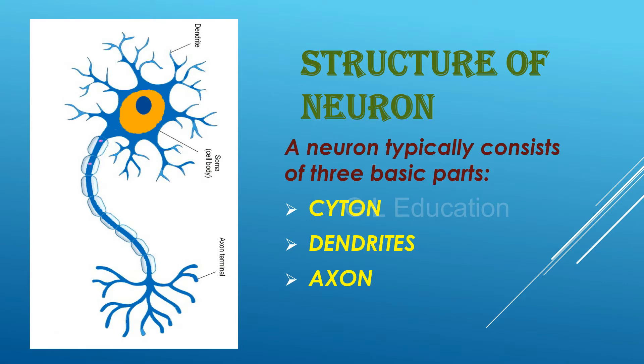Structure of Neuron: A neuron typically consists of three basic parts — Cytone, Dendrites, and Axon.